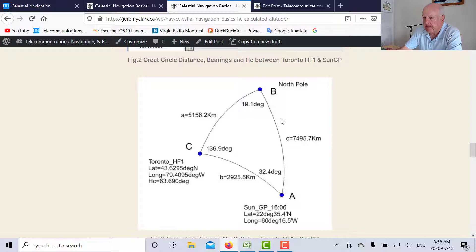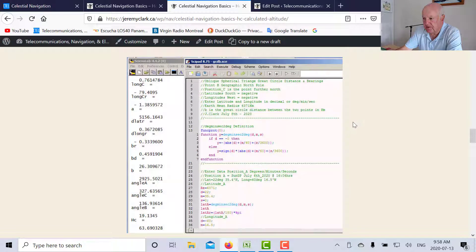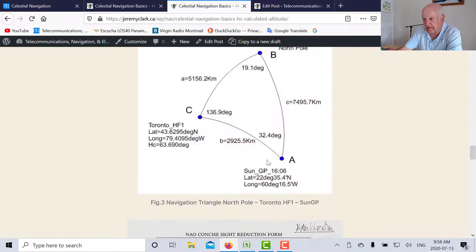So we can solve this spherical triangle. Here's the Scicolab script file that solves a spherical triangle and it gives us an HC of 63.690 degrees and it also gives us an angle C. This angle C is known as the azimuth. So it's the angle if you're the observer where is the GP located. Well this is the angle from north that you would look along to see the GP.